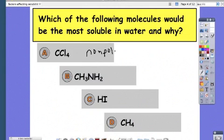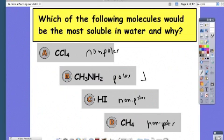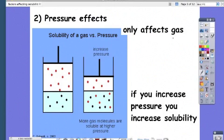So CCl4 is nonpolar because you have the same thing all the way around. CH3NH2 is polar since you have different things all the way around. HI is nonpolar because it has an electronegativity difference of 0.4 exactly, and CH4 is nonpolar. So even without the chart, you'd have to guess B because that one for sure is polar, while C could have an electronegativity difference of exactly 0.4, which it did.